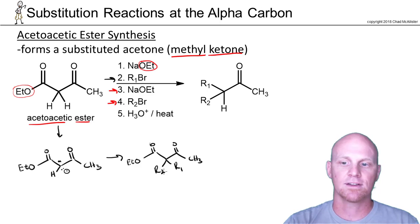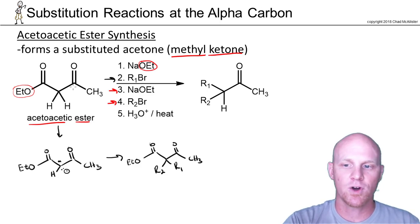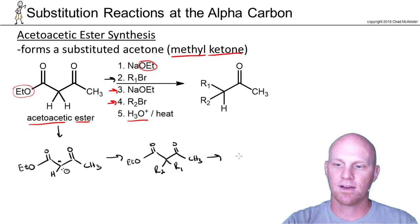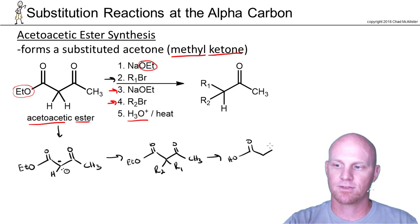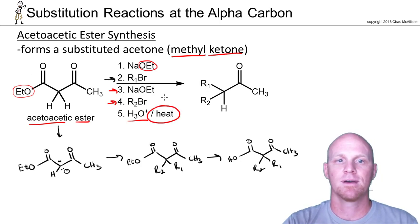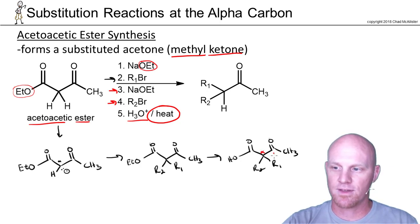Now we'll have added two groups there as well. Finally, we add H3O+ to do hydrolysis. All carboxylic acid derivatives, including our ester, turn into carboxylic acids when you hydrolyze them with H3O+. Not only do we use H3O+ but we are also heating it up. Our carboxylic acid has an alpha carbon and a beta carbon, and the beta carbon is a carbonyl.